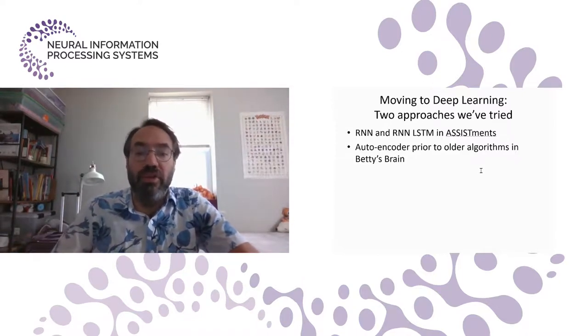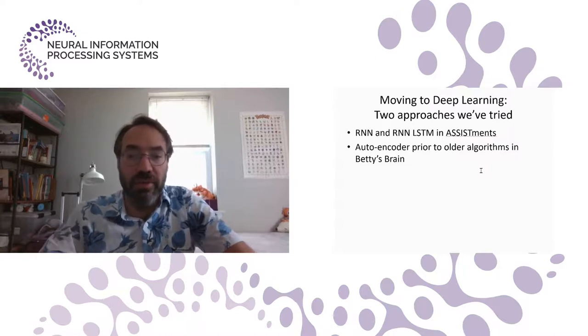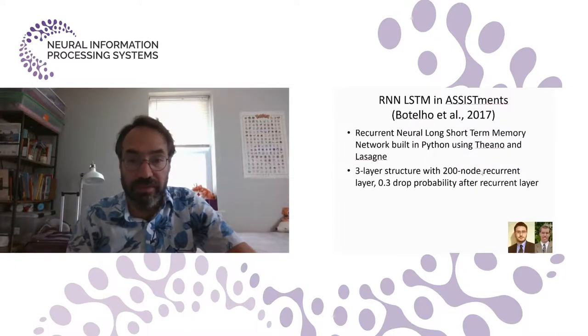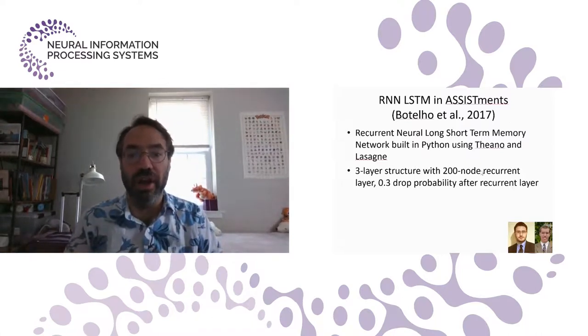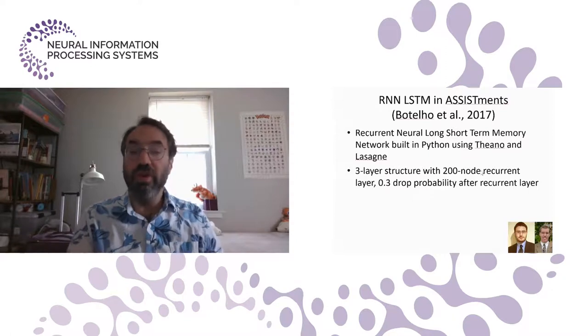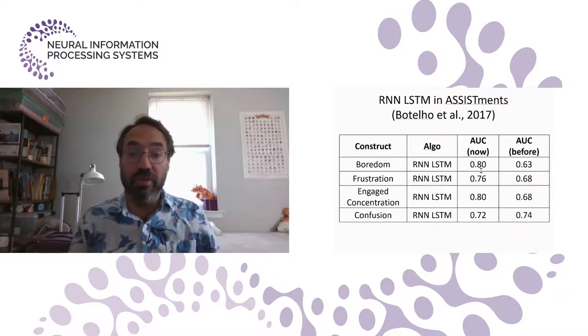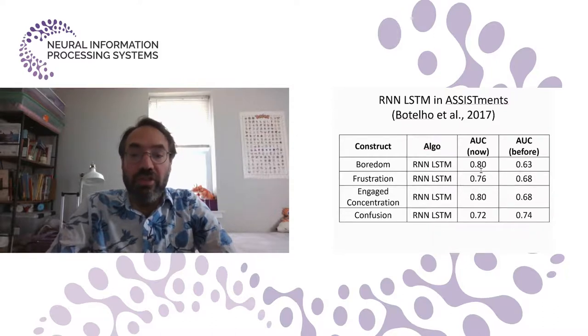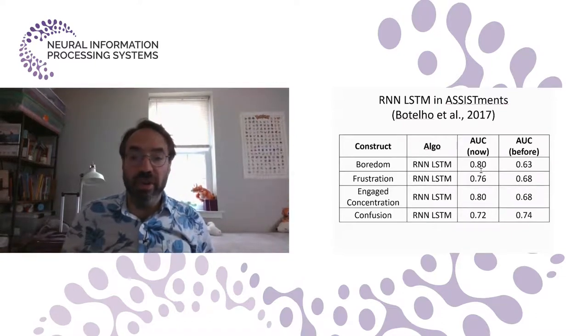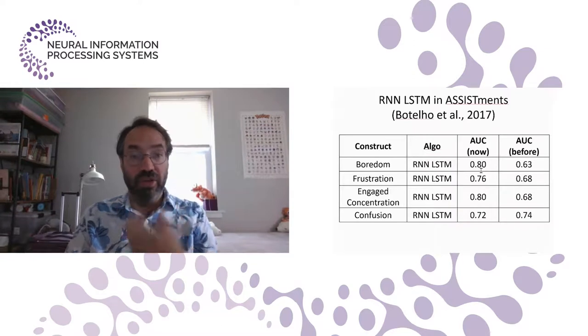Going forward, we tried moving to deep learning. We've tried a couple approaches. In the same Assistments platform I just talked about a minute ago, we've tried doing RNNs and RNN LSTMs. And in the Betty's Brain concept mapping learning environment, we tried using an autoencoder prior to using some classic algorithms. I'll talk first briefly about our work to use RNN LSTM in Assistments, where we built a recurrent neural long short term memory network in Python, relatively standard parameters. And we found that for the various affective states, we had considerably better performance on new students. So, for example, for boredom, we went from an AUCROC of 0.63 to an AUCROC of 0.8. Frustration, we had a 0.08 improvement, engaged concentration of 0.12 improvement. Ironically, for confusion, we actually dropped by 0.02. So it wasn't universally better, but there was definitely a trend towards the models being more successful.